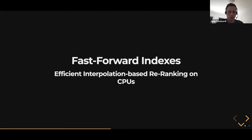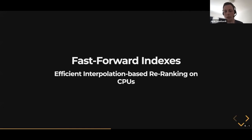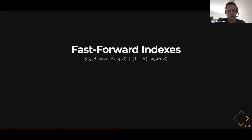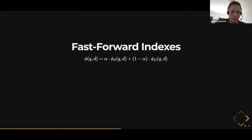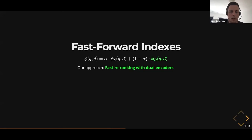Our work is called fast forward indexes. The idea is that we want to do efficient interpolation-based re-ranking, and we also want to do this just on CPUs — no GPU acceleration required. It should be fast enough to actually use in production.